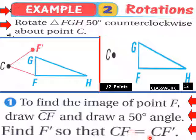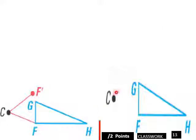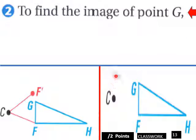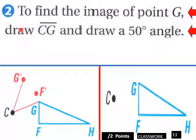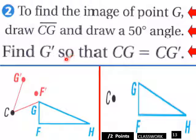And this is the same length as this segment is here. So here's F prime. Find F prime so that CF equals CF prime. So there it is there. Then what do we do next? Find an image of G. Here's our G here. So to find that, draw CG. So we're going to draw CG here. And then draw a 50 degree angle here. 50 degrees. And then measure this. That's equal that. So G prime. So find G prime so that CG equals CG prime. So here it is here.